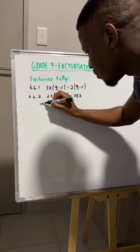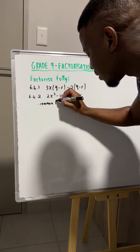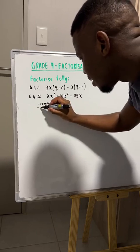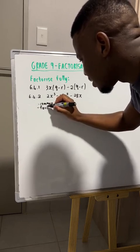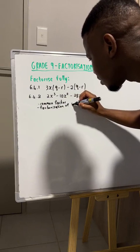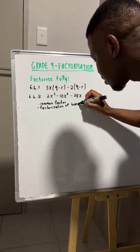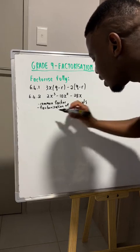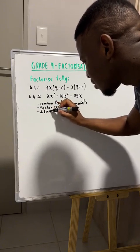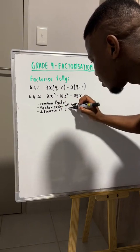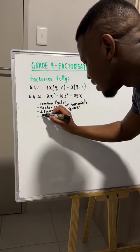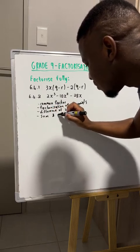The first one is that of common factors, which is just looking for factors that are common in each term. We also have factorization of trinomials, as well as the difference of two squares, and the sum and difference of two cubes.